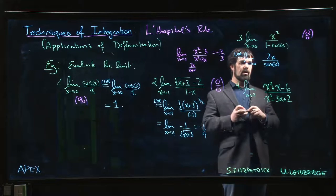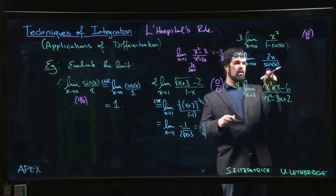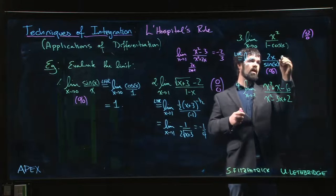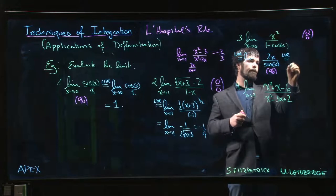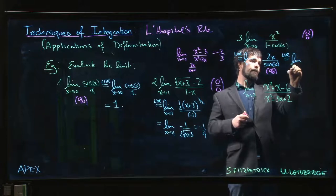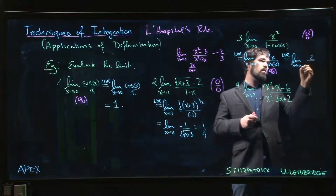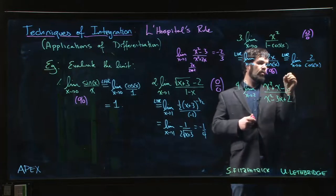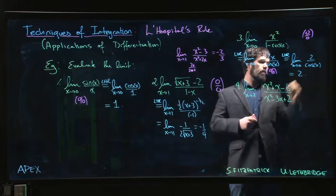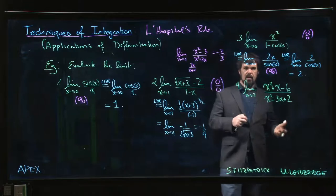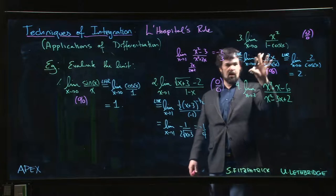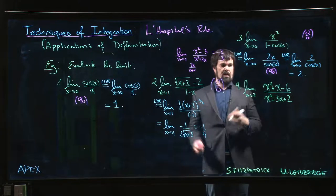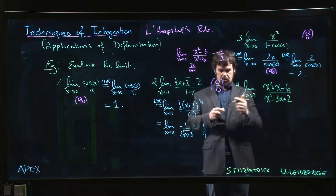If you really want to, you could say, "Hey, this is still a 0 over 0 limit" and use L'Hopital's rule one more time to get 2 over cos x, and so we get 2 over cos 0, so we get 2. All right, now of course if you already knew the answer was 2 here, there's no reason to do the extra L'Hopital's rule step. You could have stopped there and done the answer, but it's up to you.